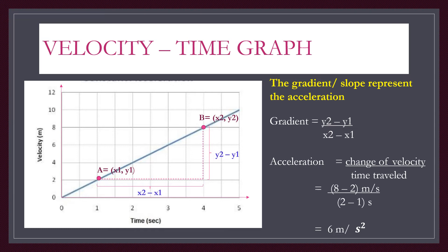On the graph there are two points a and b, named (x1, y1) and (x2, y2). y2 is 8 m/s, y1 is 2 m/s, x2 is 2 s, and x1 is 1 s. Applying these values into the gradient equation gives an acceleration of 6 meters per second squared.